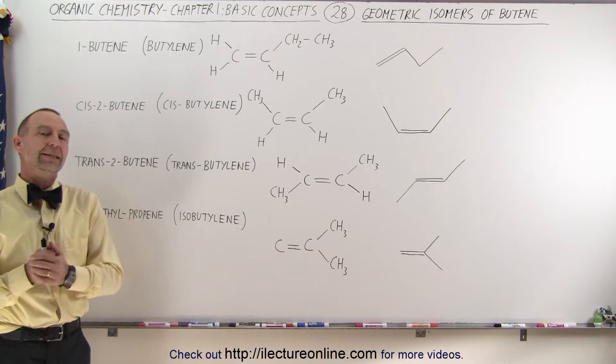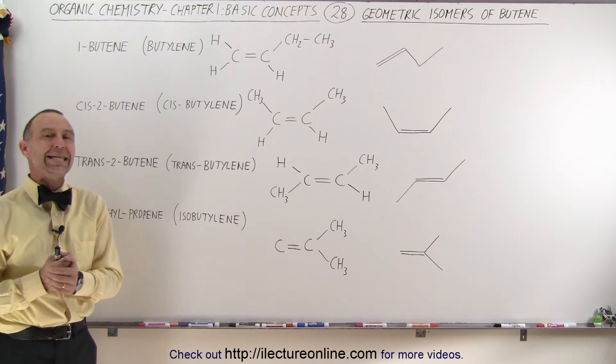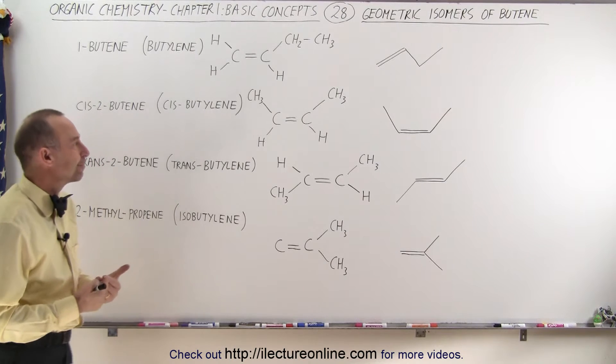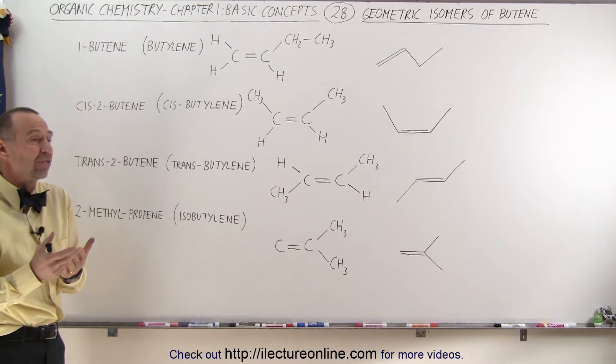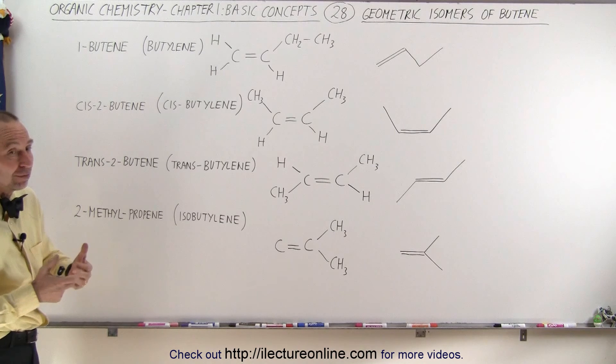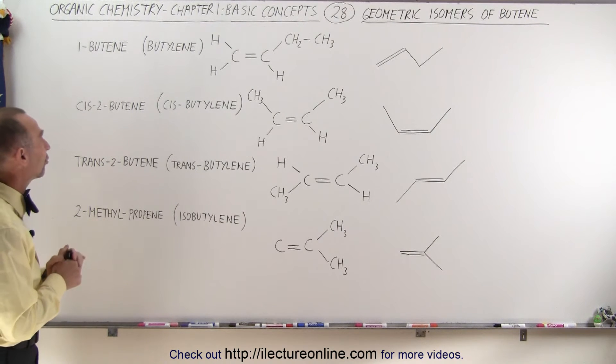Welcome to ElectronLine. Now let's take a closer look at the isomers of butene. There's actually four of them, although technically one of the four could be considered propene instead of butene, but we'll see in just a moment why we still call it an isomer of butene.